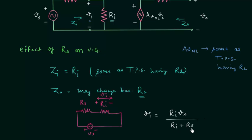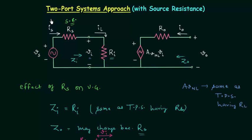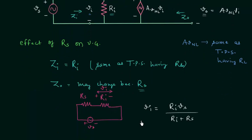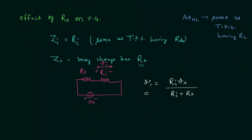By using the voltage divider rule, VI is equal to RI multiplied by VS divided by RI plus RS. If you remember from the first presentation of the two-port systems approach, we found VO is equal to AVNL times VI. Substituting VI into this equation, the output voltage VO is equal to AVNL multiplied by RI divided by RI plus RS, multiplied by VS.